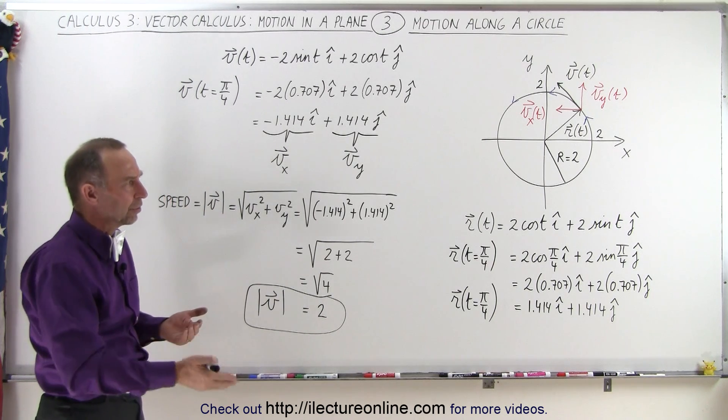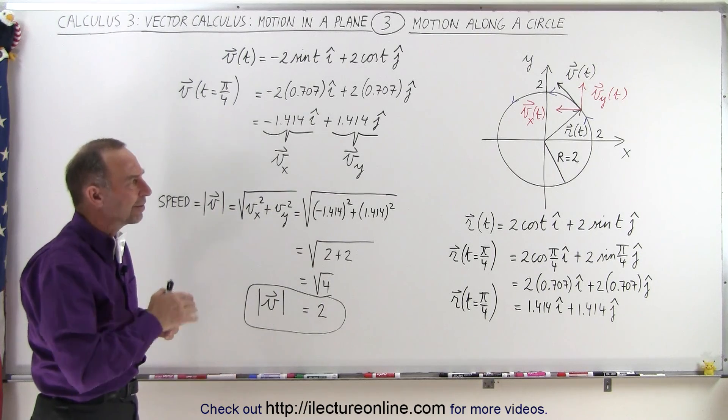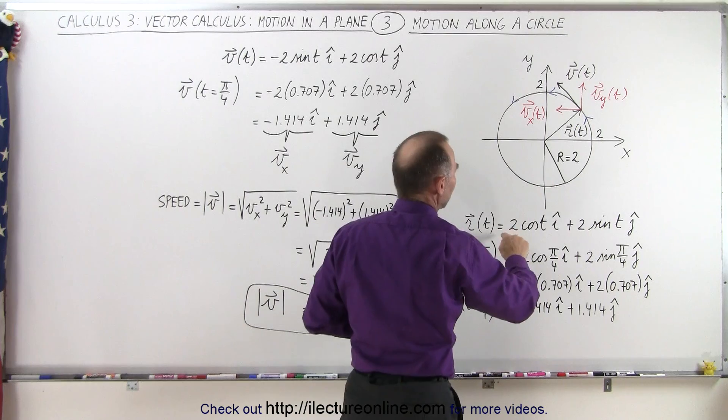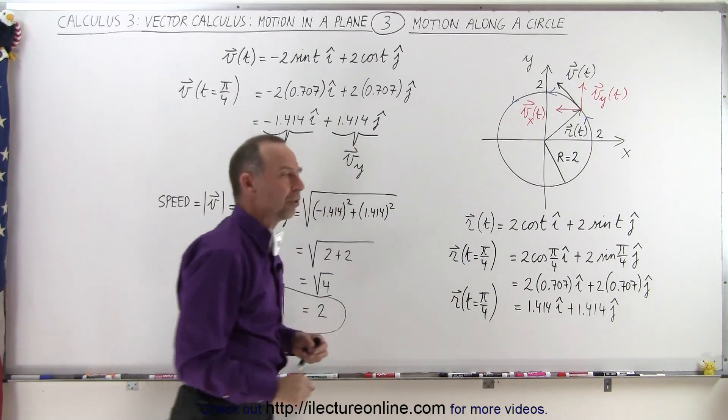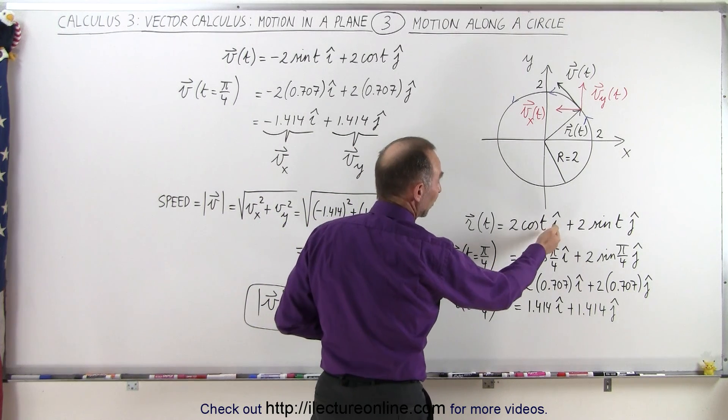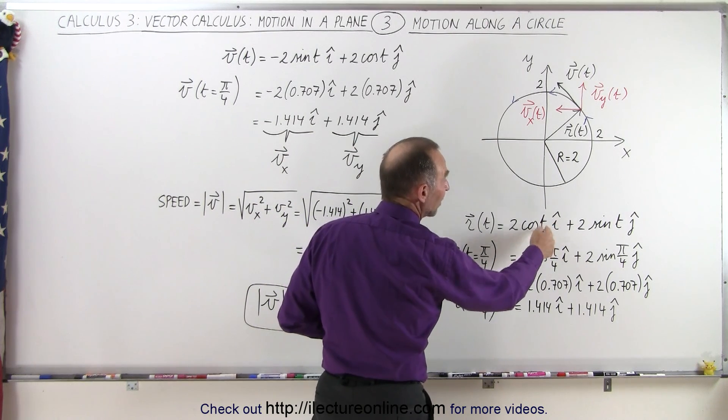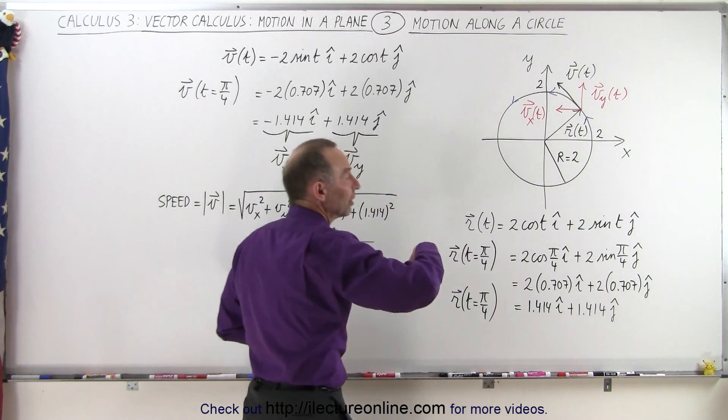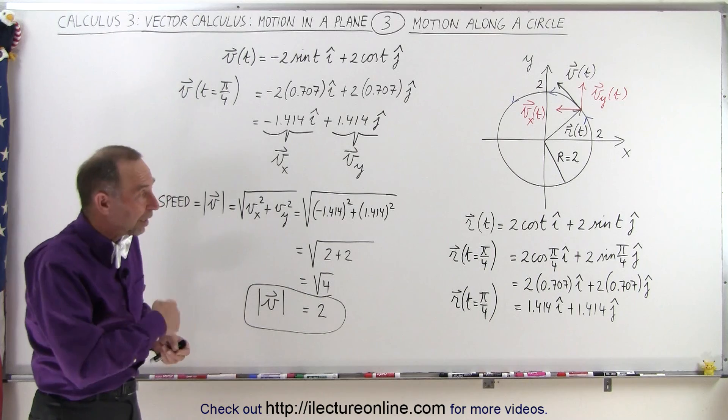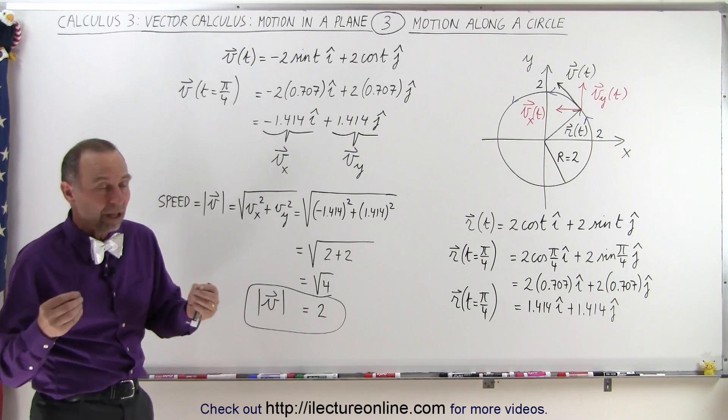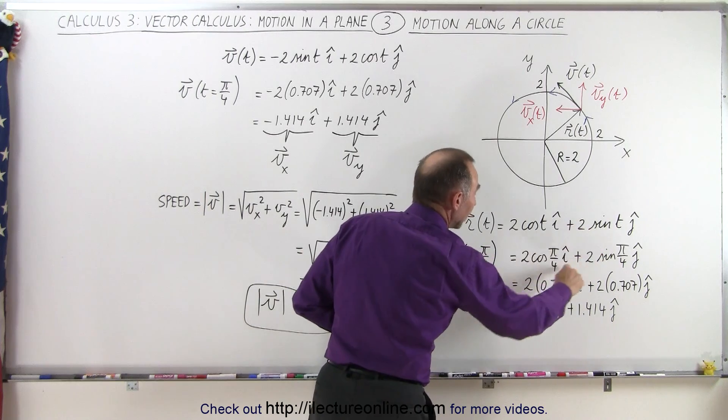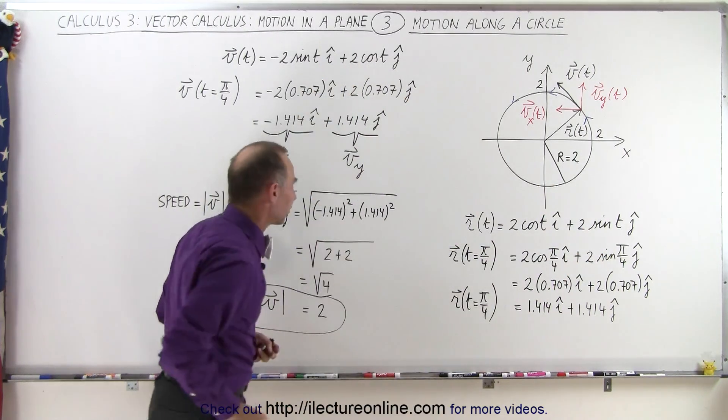It turns out that the velocity will always be the same amount on the circle in this particular case if we define our position vector as such. Of course, if we make the position vector differently, if, for example, we have some constant times t, then it will move faster if the constant is greater than 1. If we have a constant times t where the constant is less than 1, it will move slower. So the velocity is indeed determined by the position vector, which then, when we take the derivative of that, gives us the velocity vector.